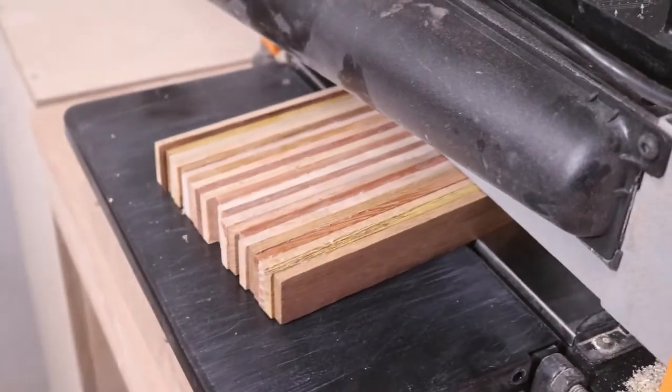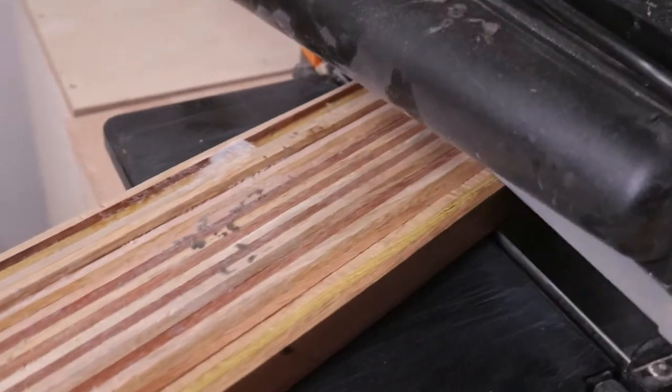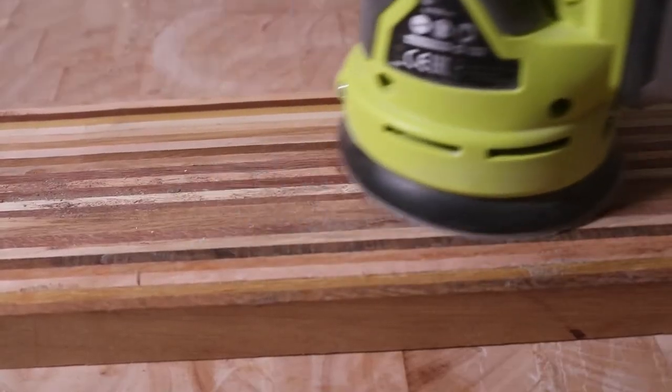I removed any leftover glue with some quick passes through the thickness planer and sanded the piece up to 120 grit. This is still a tool, so no need to get out the 300 grit pads.